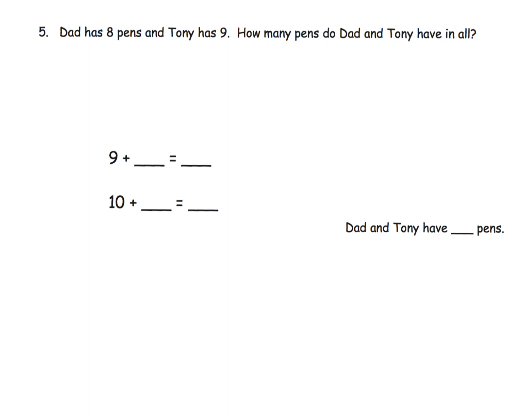Dad has 8 pens, Tony has 9 pens. How many pens do they have in all? Let's model this. Again, I'm going to be super boring. I'm going to use dots. We got Dad with 8: 1, 2, 3, 4, 5, 6, 7, 8. And Tony has 9: 1, 2, 3, 4, 5, 6, 7, 8, 9.